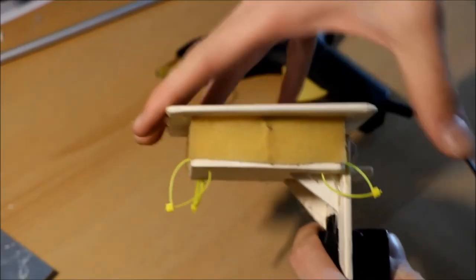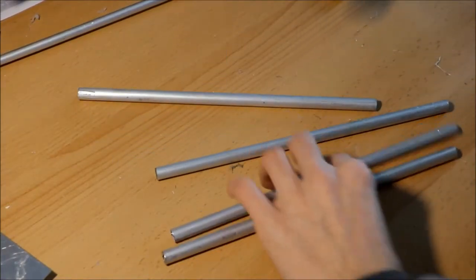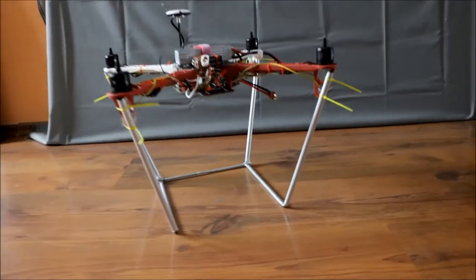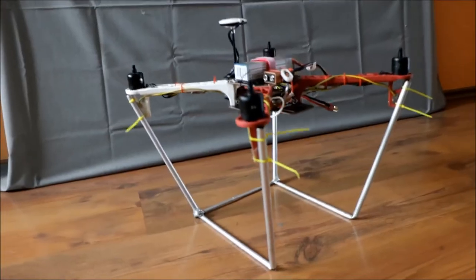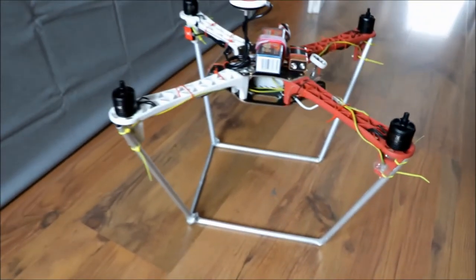Now we have to do the landing gear. Use 10mm aluminum tubes and with some zip ties tie it on the drone arms like that. I also put some tubes at the bottom for a stronger landing gear.